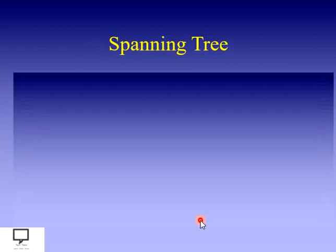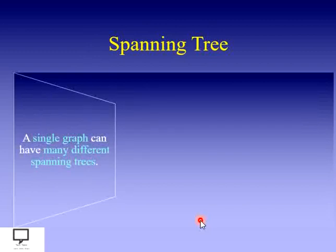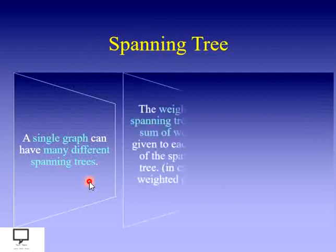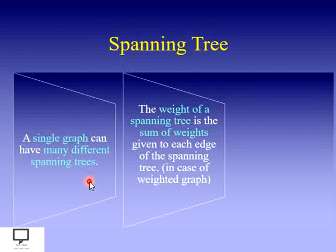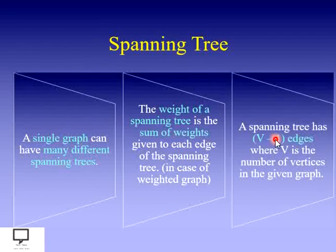Let's return to the spanning tree. A few important key points: first, we can find many different spanning trees from a single graph. If it is a weighted graph and we want to find the weight of a spanning tree, we do so by summing the weights of all included edges. Whatever edges are included in a spanning tree, the sum of their weights is the weight of the whole spanning tree. If a graph has V vertices, its spanning tree will have V minus 1 edges.